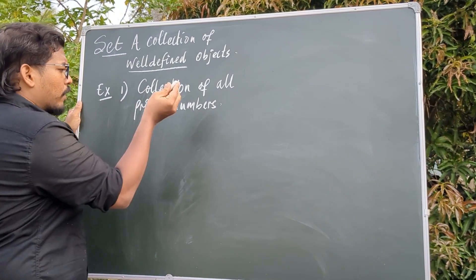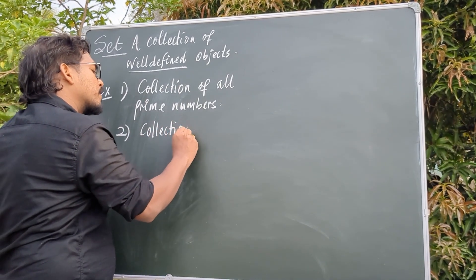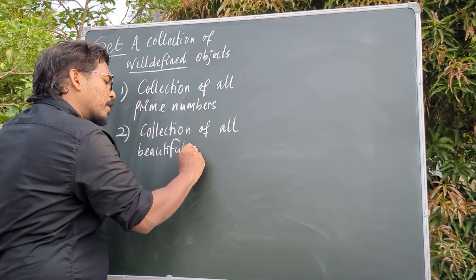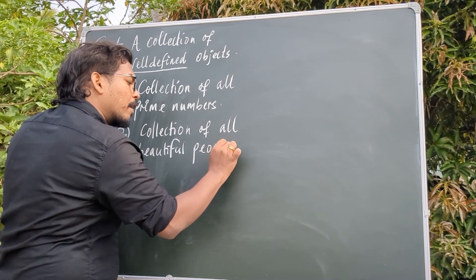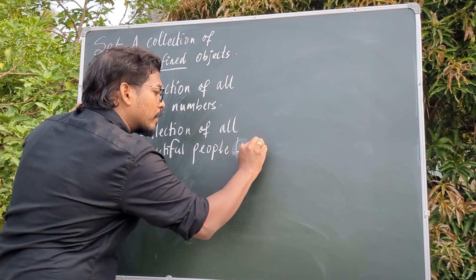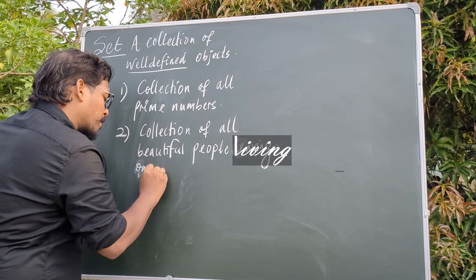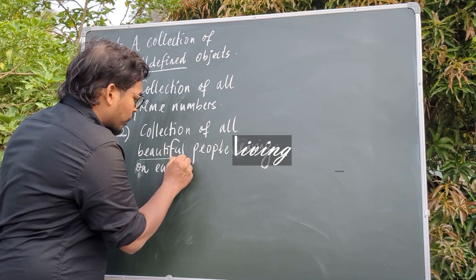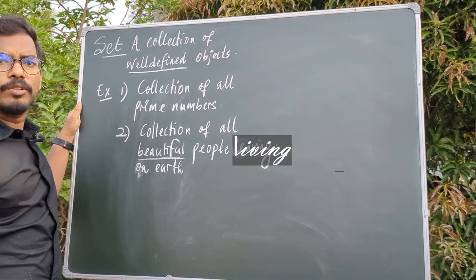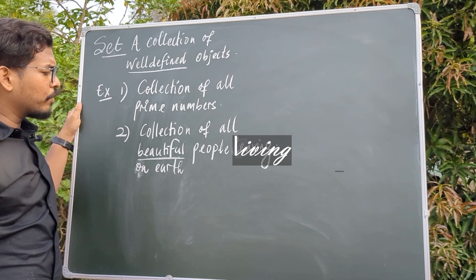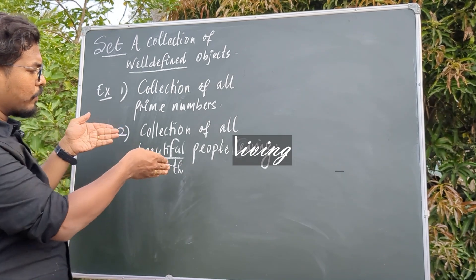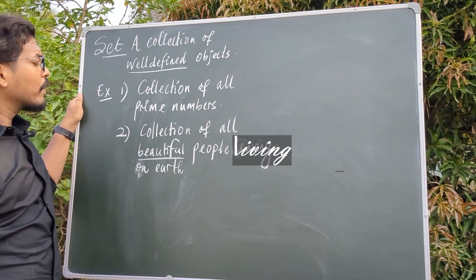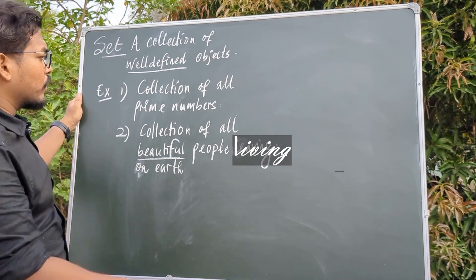We know which numbers are prime and which are not. Two is a prime, three is a prime — no one can argue that three is not a prime. But if I take the collection of all beautiful people living on earth, this collection is not well-defined because 'beautiful' depends on the person. Someone can be beautiful to my eye and that same person can be ugly to someone else. So this collection is not well-defined, hence it is not a set.